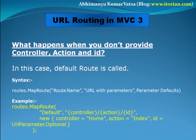Think about what happens when you don't provide a controller, action, or id. In this case, the default route parameters will be called. For example, controller name defaults to Home, action defaults to Index, and id is optional. Now switch back to Visual Studio and look at the practical demonstration.